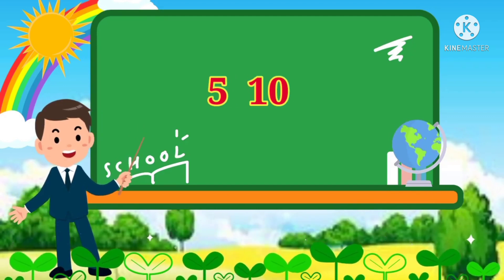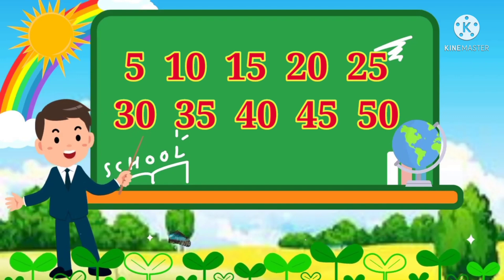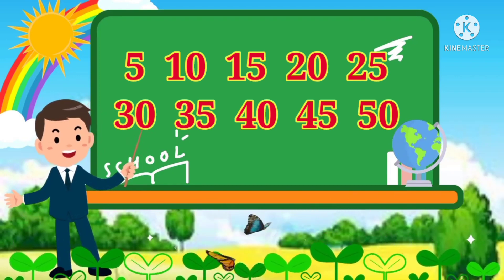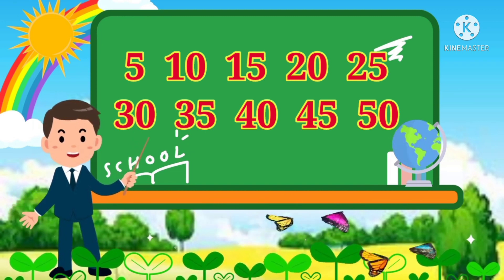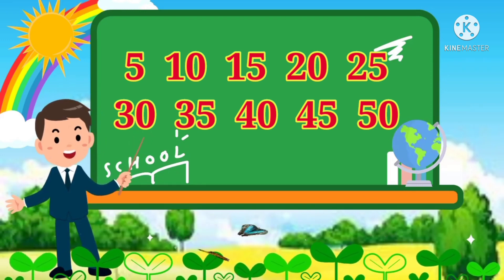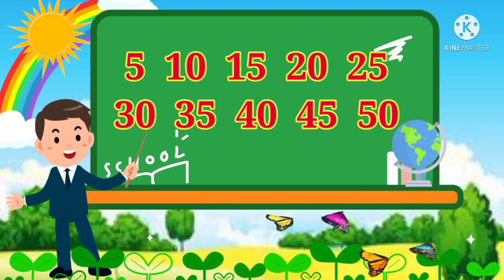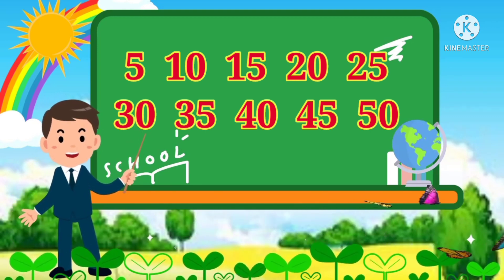Let's learn one more time. 5 1s are 5. 5 5s are 25. 5 6s are 30. 5 7s are 35. 5 8s are 40. 5 9s are 45. 5 10s are 50. Like this, you learn this table.